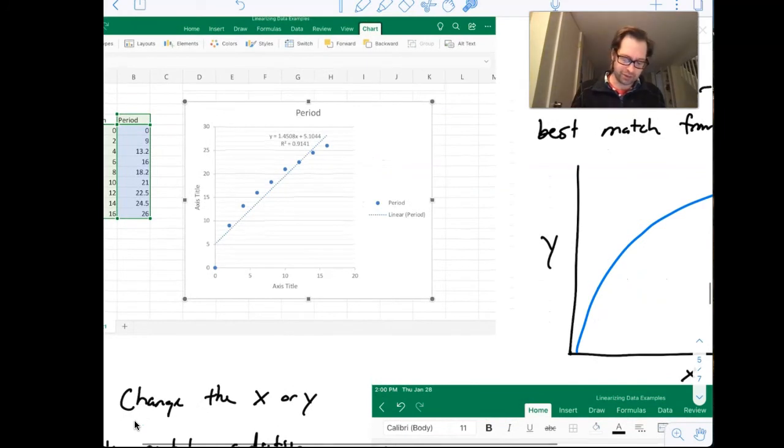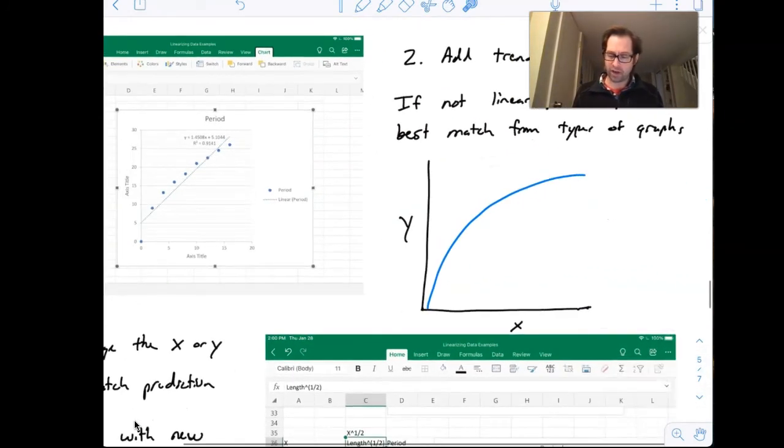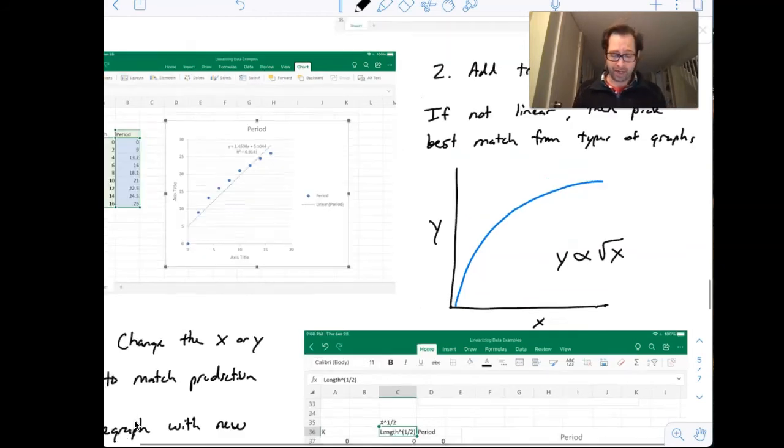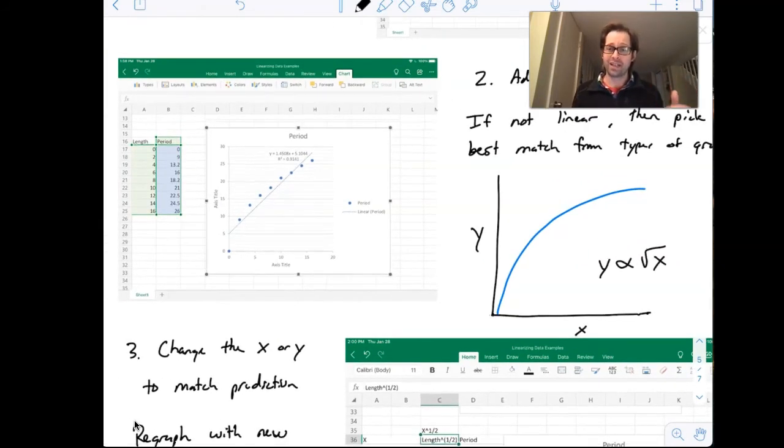In fact, I might look to a trend that looks like this instead. And that would be more of that square root relationship. So in this case, my y values might be proportional to the square root of x. So what did y stand for? In my graph, y was the period, x was the length. So I'm looking for a relationship between the length and the period of my data.